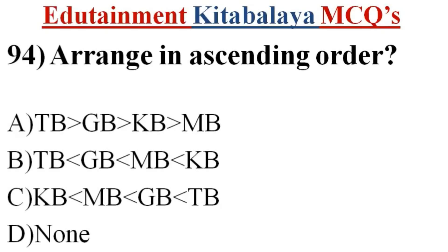Question number 94. Arrange in ascending order? A. TB GB MB KB. B. TB GB MB KB. C. KB MB GB TB. D. None. Correct answer is C. KB MB GB TB.